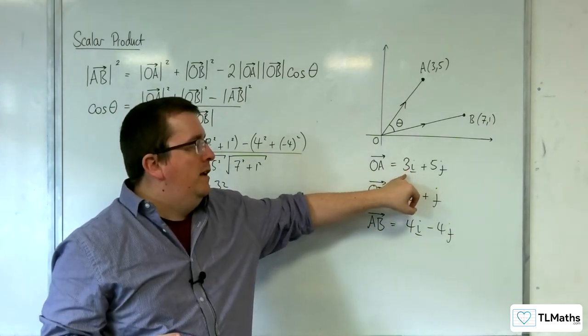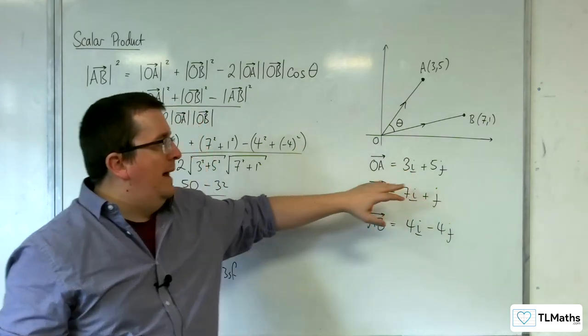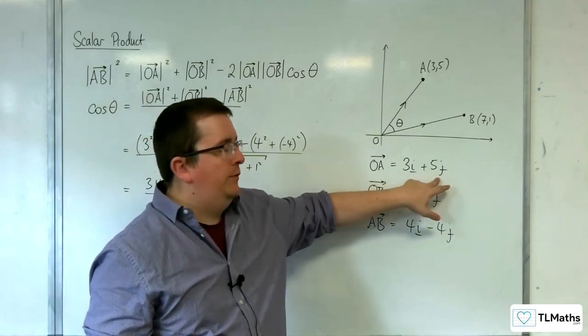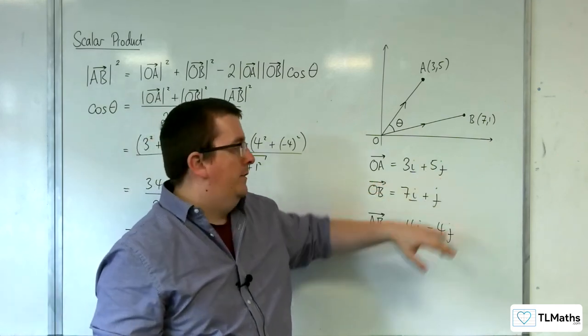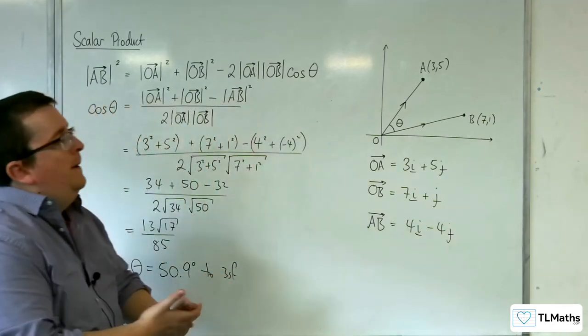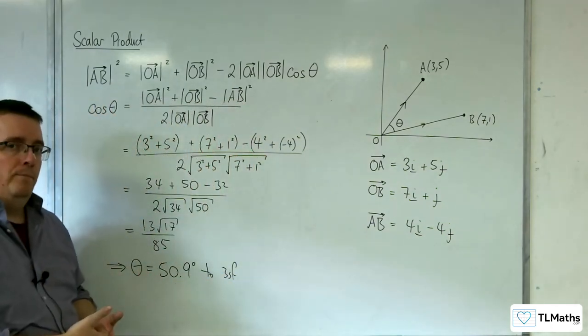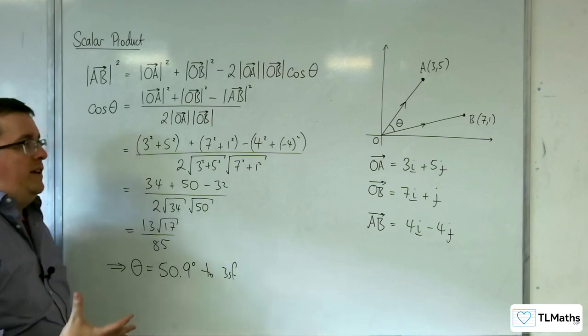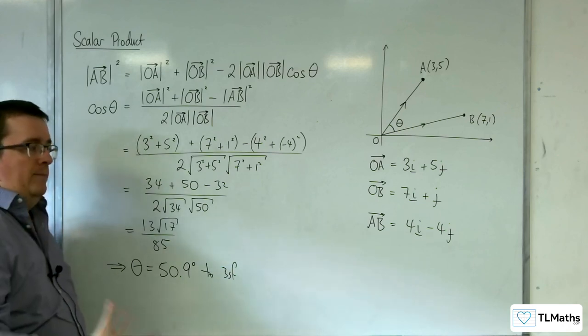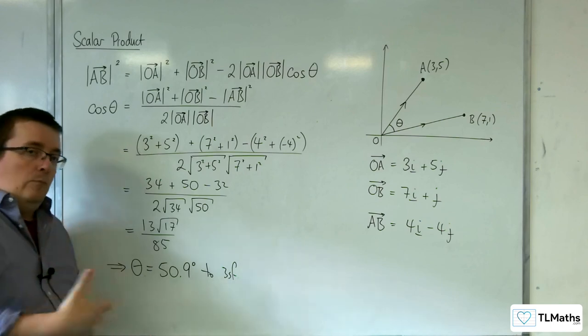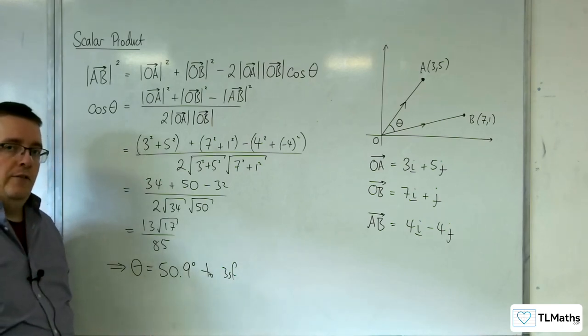so that the vectors here, not only do I need to write them as, say, A1i plus A2j and B1i plus B2j, but I also want to be able to take that up to 3D as well. So in the next video, we're going to generalize it in 2D, and then we're going to take it up to 3D after that.